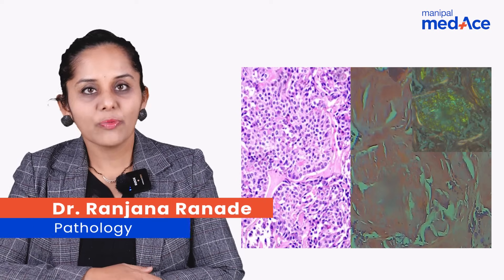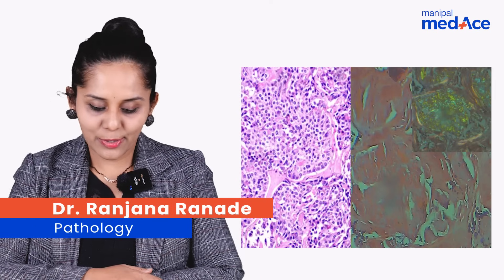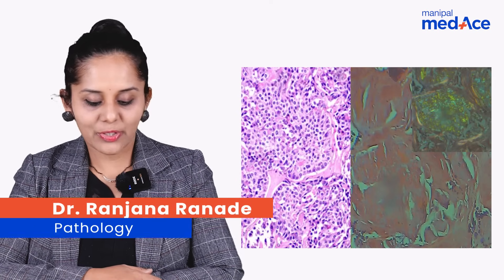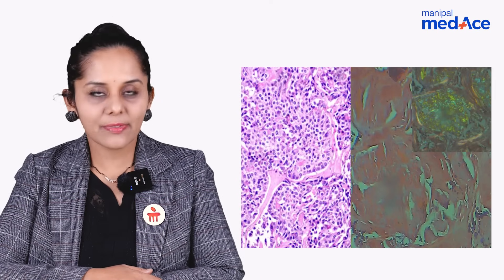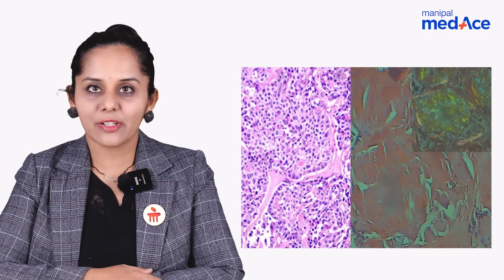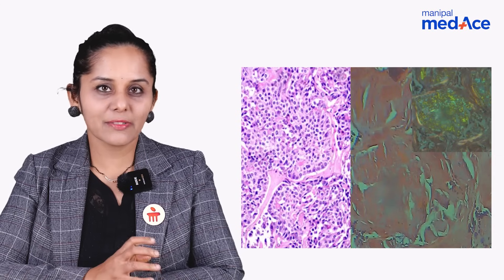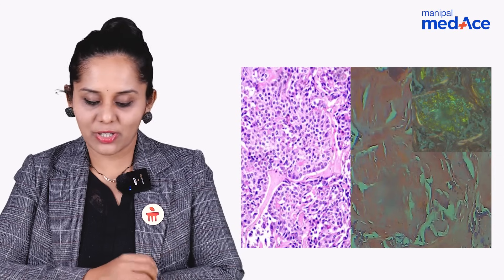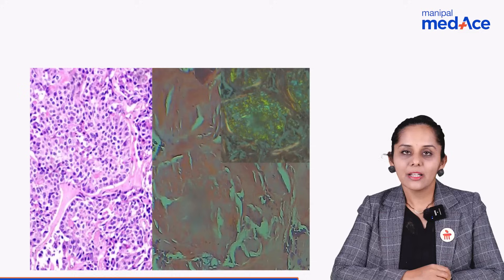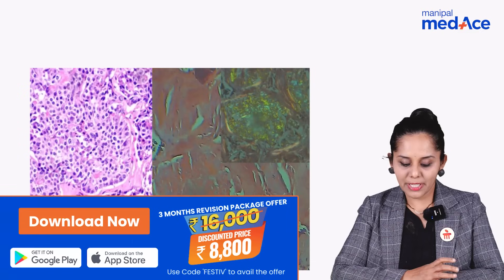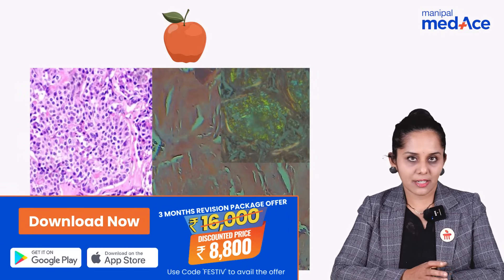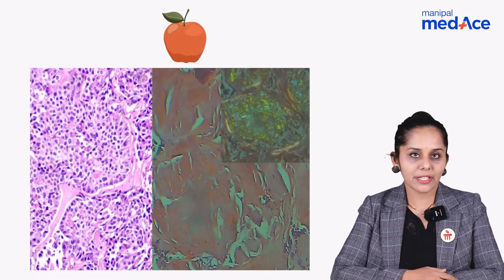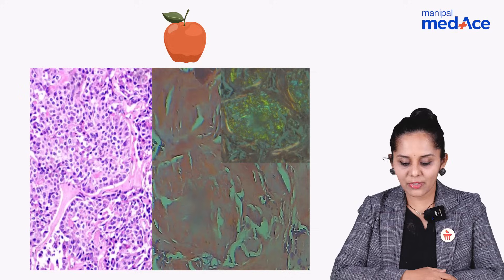This is a case of medullary carcinoma of thyroid. You can see plasma cytoid cells with a lot of extracellular amorphous eosinophilic material, just pinkish in the image. There is a brick red appearance because of the Congo red stain, and there is a lot of amyloid in medullary carcinoma of thyroid.